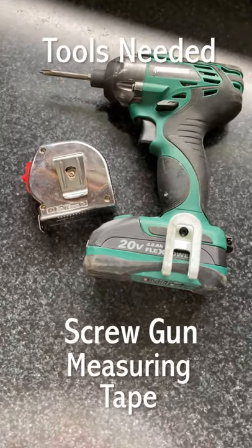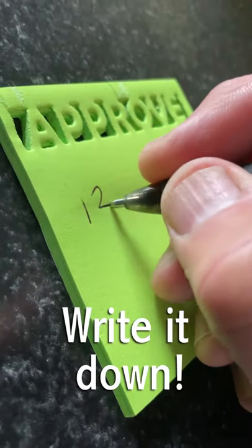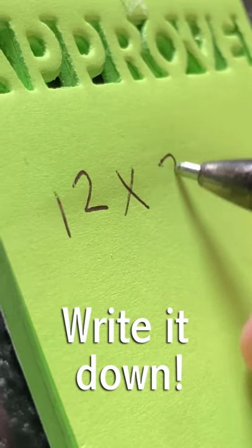You'll need a screwdriver and a measuring tape. Measure the width or depth of the cabinet. Be sure to write it down. Then measure the length, then write it down.